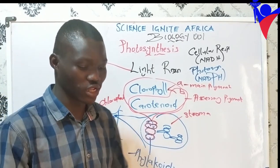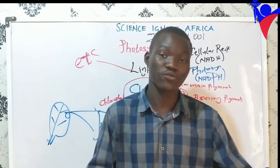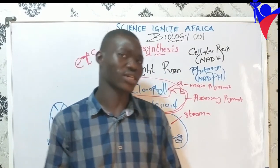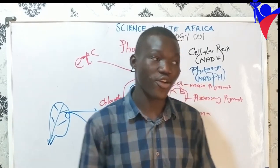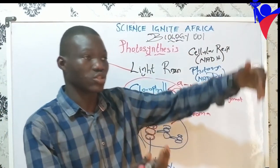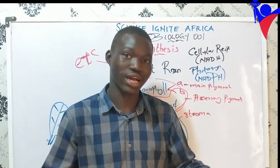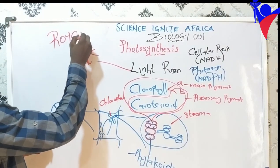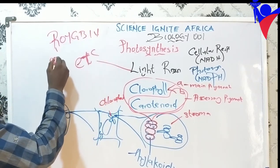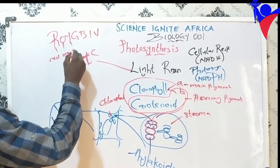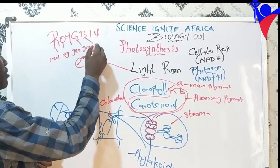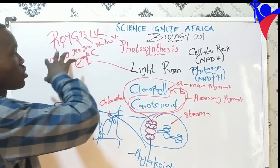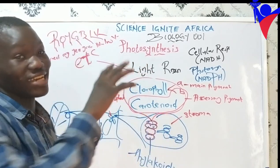To understand how chlorophyll absorbs light, you have to understand the nature of light. If you see the sun, it looks white, but it's not just white — there are different colors. If you use a prism and allow sunlight to pass through, you are going to see different colors: ROYGBIV — R for red, O for orange, Y for yellow, G for green, B for blue, I for indigo, and V for violet. These are the lights you can find inside normal sunlight.